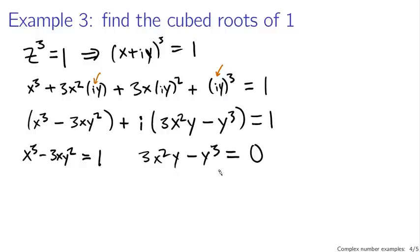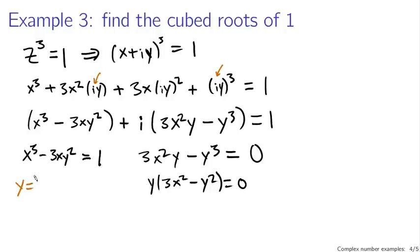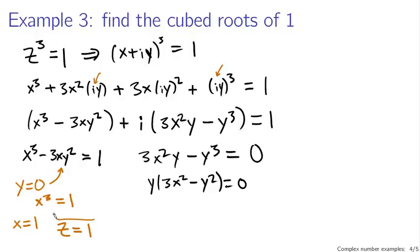The imaginary equation is pretty easy to work with. We can factor a y out: y times (3x² minus y²) equals zero. One possible solution comes from y equals zero. Substituting that into the real equation gives x cubed equals one. Since x is a purely real number, x equals one. So x equals one, y equals zero — that's one of our solutions: z equals one. We could have told that right off the bat since one cubed is one.